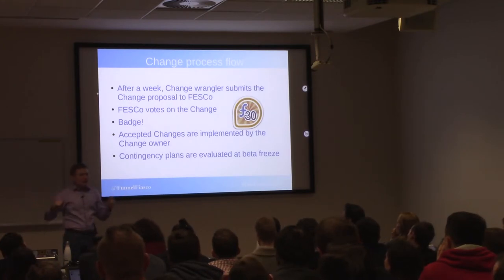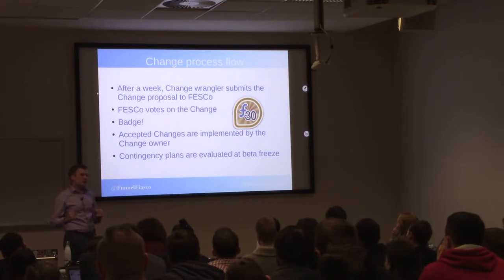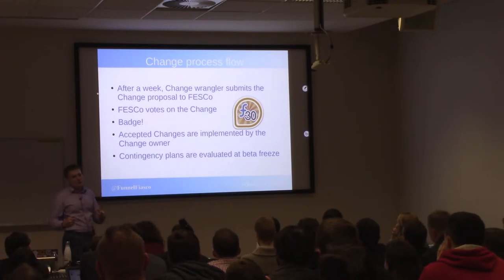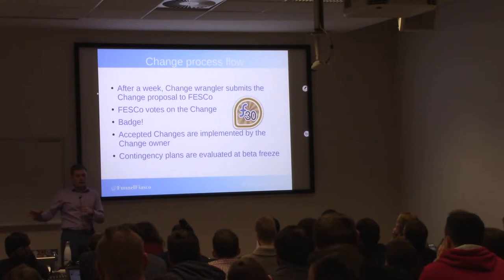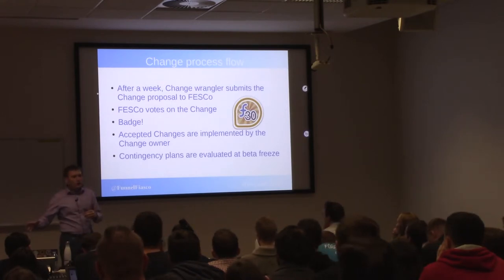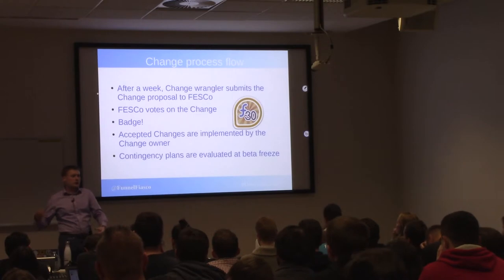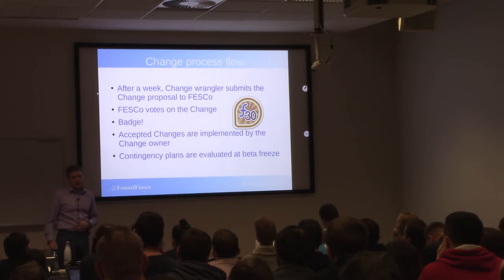At the beta freeze, we look and see which changes are actually done. If there are ones not yet finished, we look at their contingency plans and FESCo decides: do we give you a little extra time, do we grant a freeze exception, or do we say "sorry, try again in the next release"?